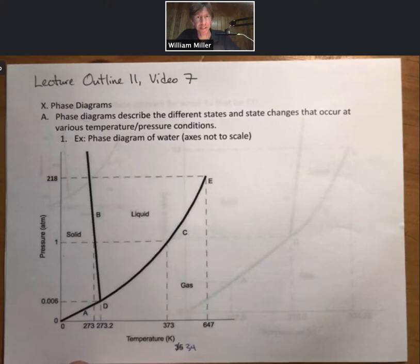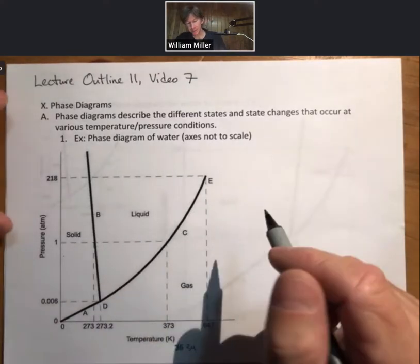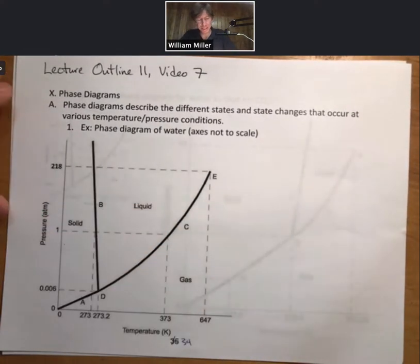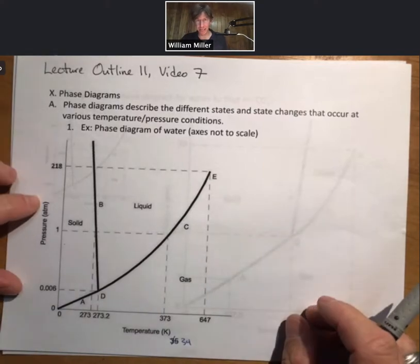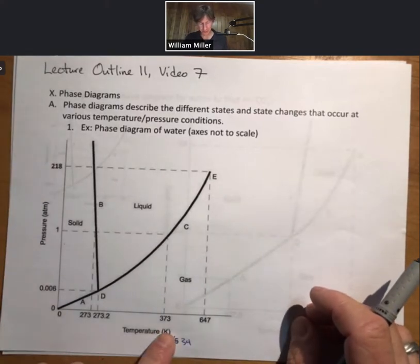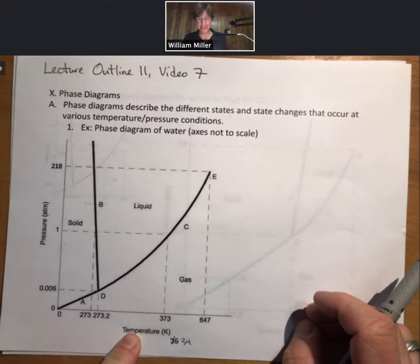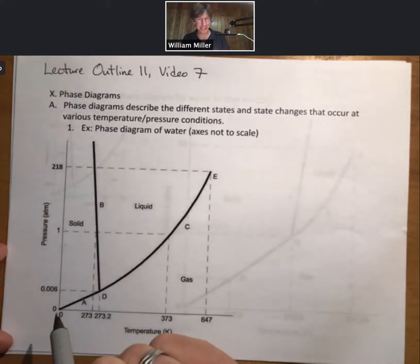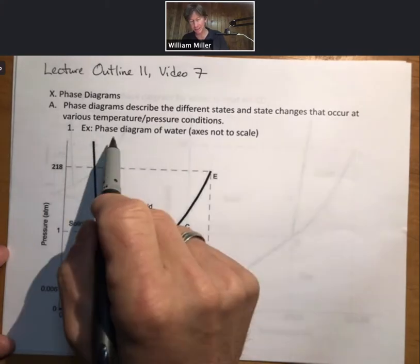Last video for this lecture outline. Now there's a little bit we have to know about phase diagrams. First off, they describe different states and state changes that occur at various temperature and pressure conditions. We've got pressure on the y-axis here, temperature on the x-axis, and that will always be true. Also typically true is that the axes are not necessarily to scale. This is a phase diagram of water.